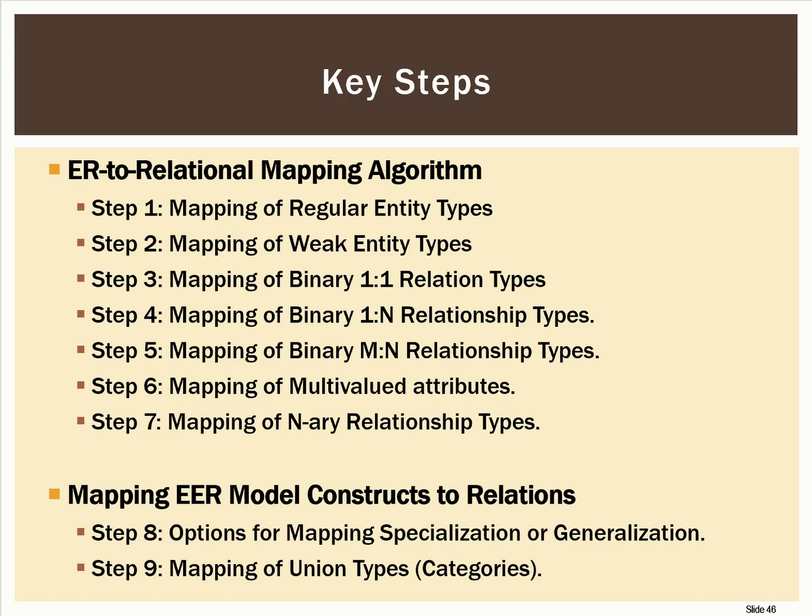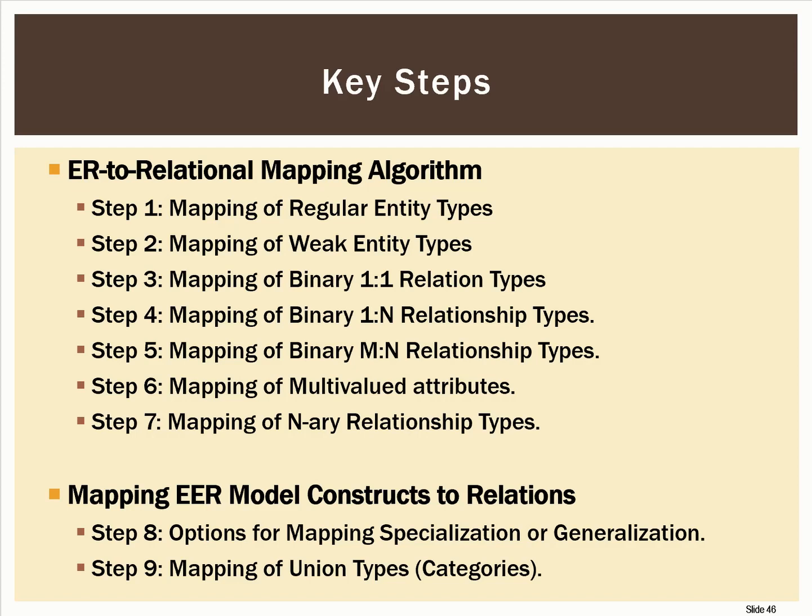There are two more steps at the bottom for expanded entity relationship models, which we will cover in an upcoming video. While we are converting our ER diagram to a physical model, there are three goals to keep in mind. The first goal is to preserve all information — all the attributes, all the data we've described, the entity types — everything in our diagram has to be represented or calculable from the database. The second is to maintain the constraints to the extent possible, such as total participation or one-to-many relationships. The third is to minimize null values, as we don't like to see a lot of null values in our database.